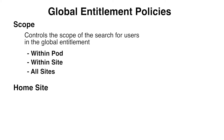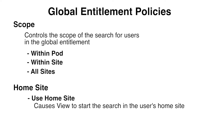The global entitlement home site policy causes the global entitlement to recognize users' home sites. A global entitlement doesn't recognize a user's home site unless you enable the home site policy for the global entitlement. For entitled users that have home sites, the use home site policy causes View to start looking for desktops or applications in the user's home site instead of on the site to which the user is currently connected.